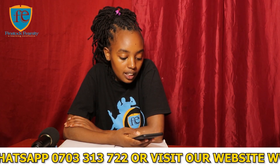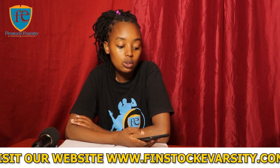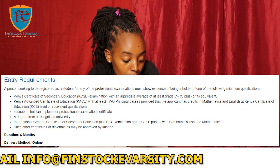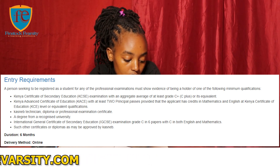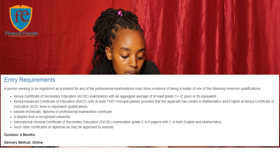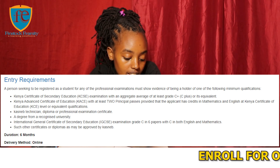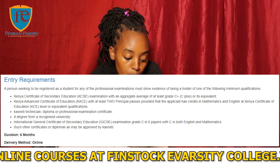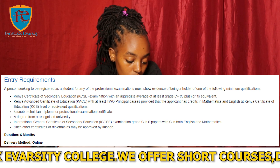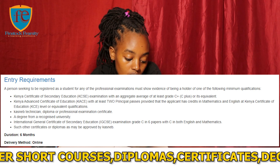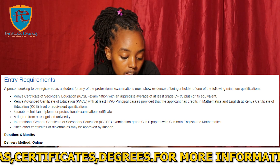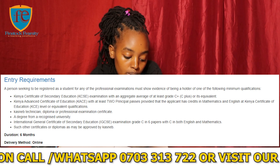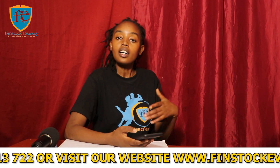What are the entry requirements to do CCP? Number one, you need a KCSE aggregate of C plus. Number two, Kenya Advanced Certificate of Education with at least two principal passes, provided the applicant has credits in Mathematics and English at KCE level or equivalent. Other qualifications include a CASNIB technician diploma or professional examination certificate, a degree from a recognized university, or an IGCSE with grade C in six papers including English and Mathematics. Such other certificates or diplomas as may be approved by CASNIB are also accepted.